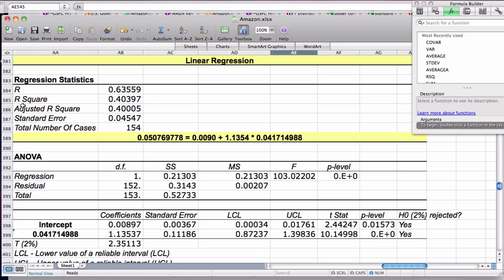In our example, the X variable was the S&P 500, and the dependent variable was the Amazon stock price. We can say that 40% of the movement of Amazon stock price is due to the S&P 500.